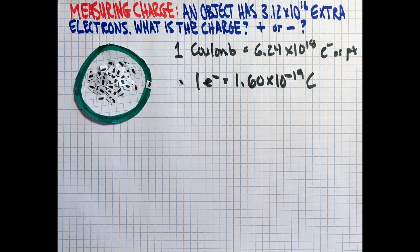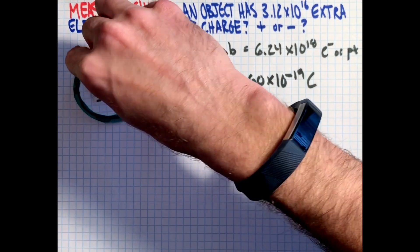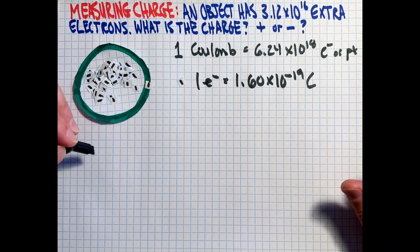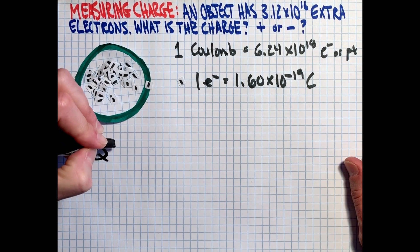So how do we calculate the charge on this object that has 3.12 times 10 to the 16 extra electrons? And so we'll take away a few since that was supposed to be one Coulomb. There we go. So here's our object with 3.12 times 10 to the 16 extra electrons on it. Well, we can use our formula, Q is charge.